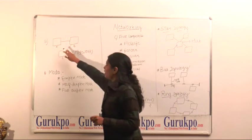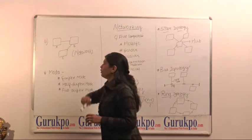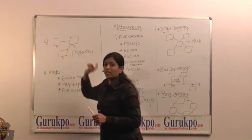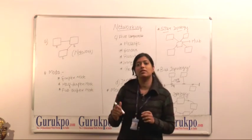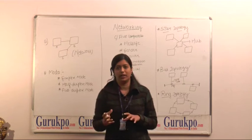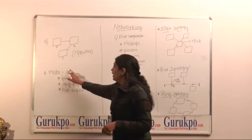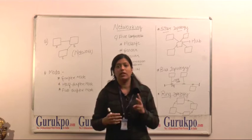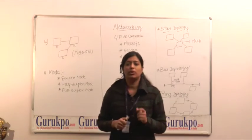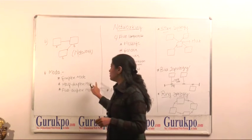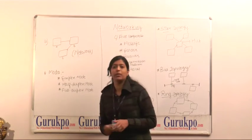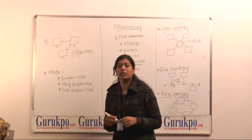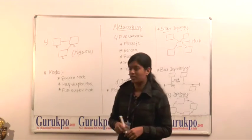Here I have shown you an example of a network — three computers which are connected with each other. This process is called networking. In networking, how we talk to each other depends upon three types: first is simplex mode, second is half-duplex mode, and third is full-duplex mode. It is simply about how messages are transmitted.